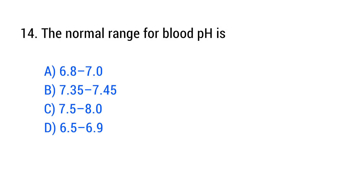Question No. 14. The normal range of blood pH is? The right answer is Option B: 7.35 to 7.45.